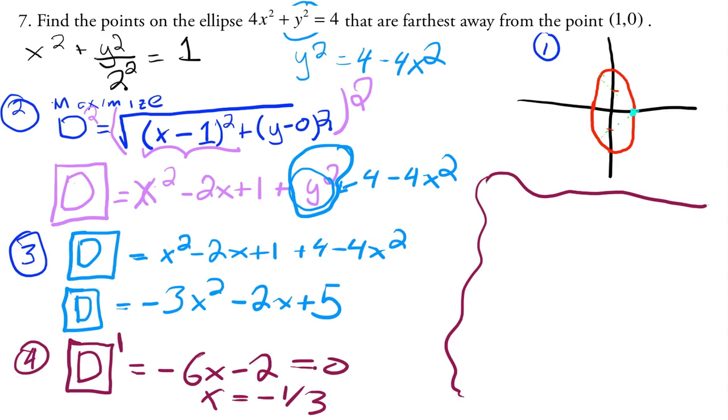And so you'll notice that x equals -1/3, well that's about right there. And also notice that there's two y values. So the points that are farthest away from the ellipse are -1/3 and the y value.